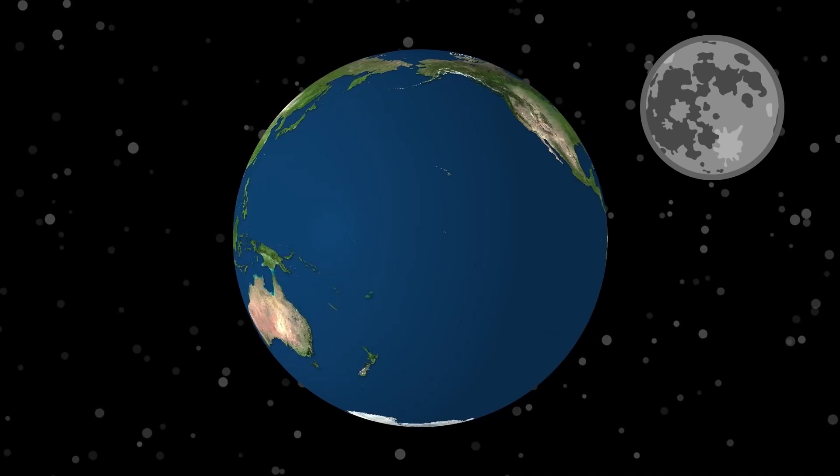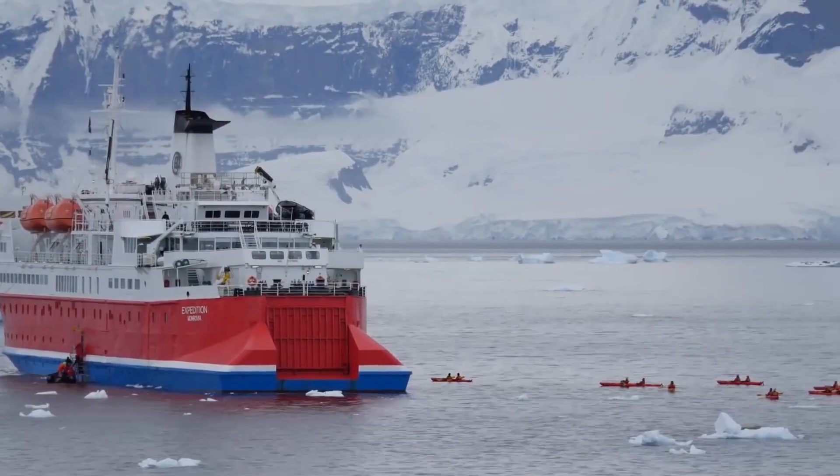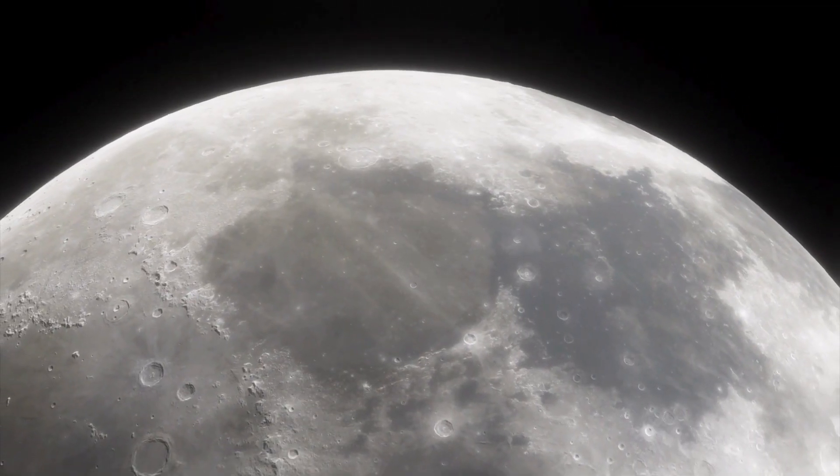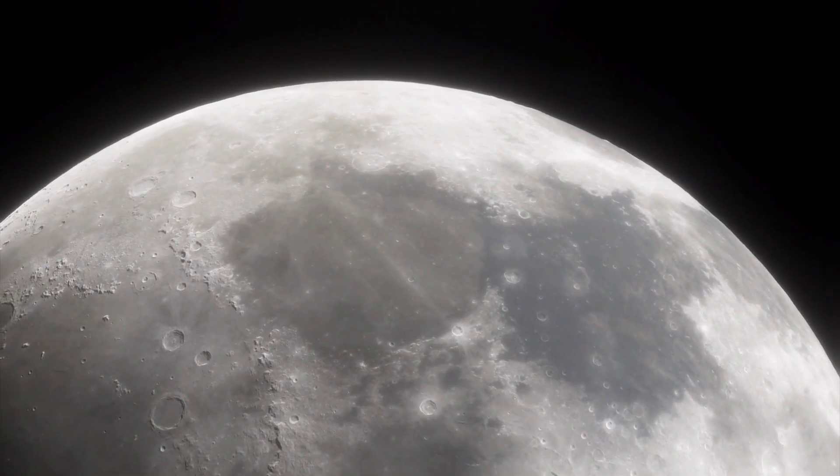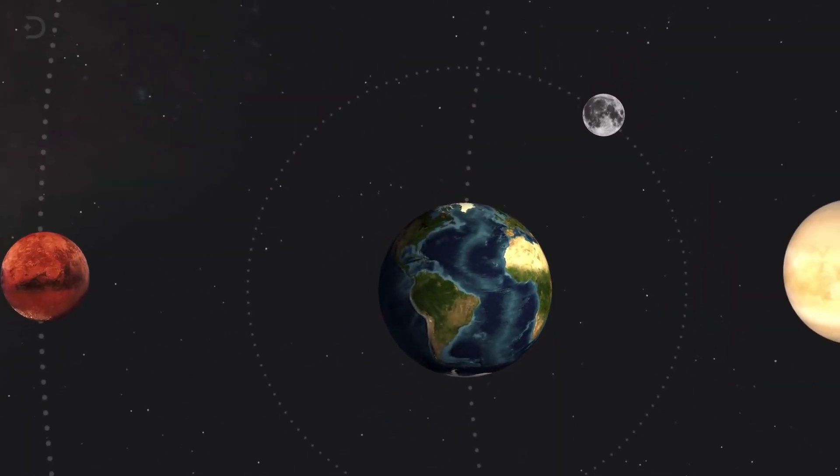Essentially, the Moon acts as a stabilizer for our planet's orientation and climate, making all life on Earth possible. In exploring these scenarios, we gain a deeper appreciation for the Moon's role in our solar system and the delicate balance that allows life to thrive on our planet.